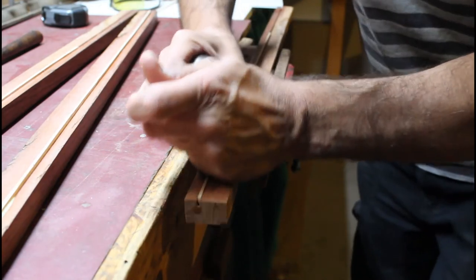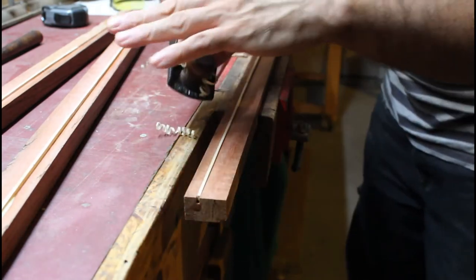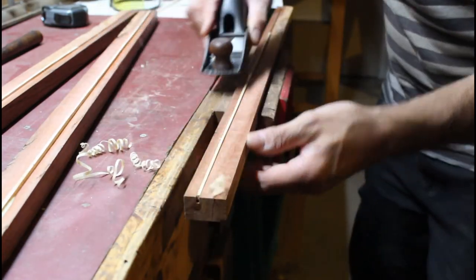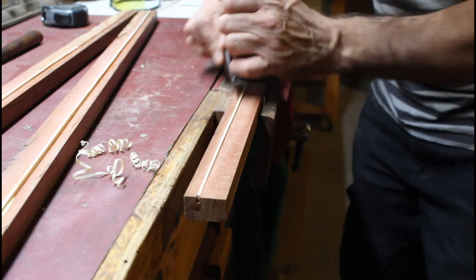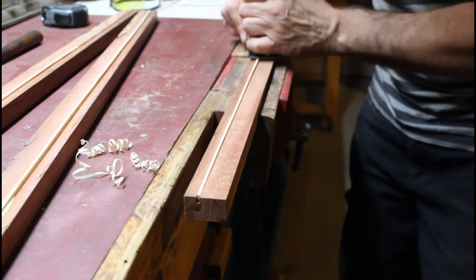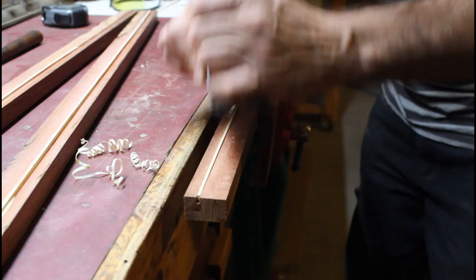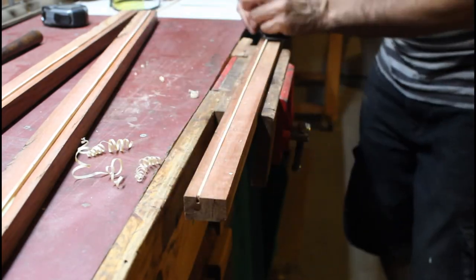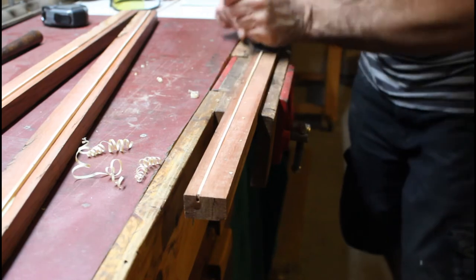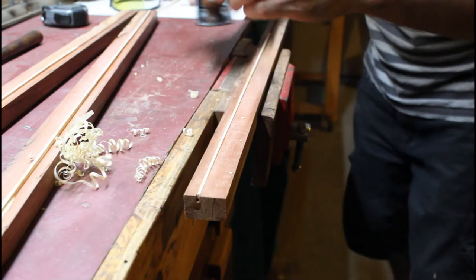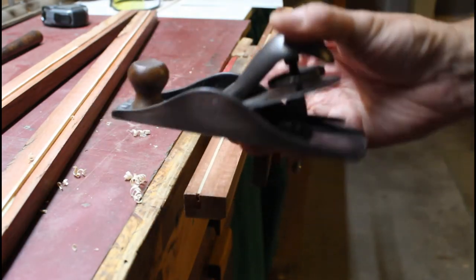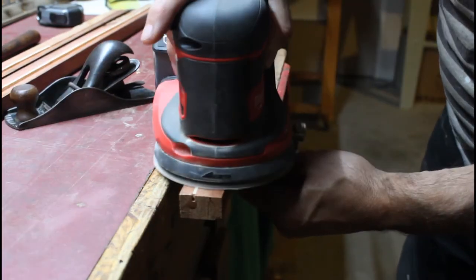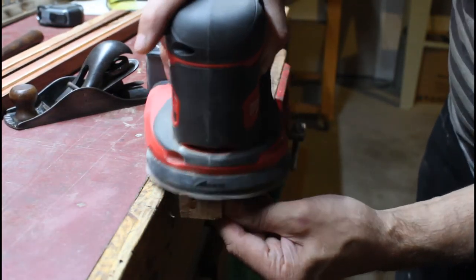Once these strips had thoroughly dried, I used my block plane to remove the bulk of the waste. These were then sanded to provide a nice smooth finish.